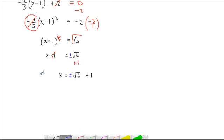If you're confused as to what the two answers would be, one of them would be x equals positive square root of 6 plus 1, and the other answer would be negative square root of 6 also plus 1. So those are the two answers.